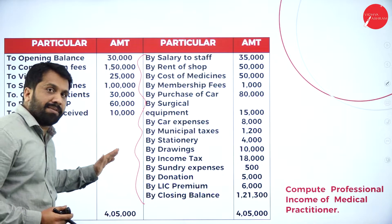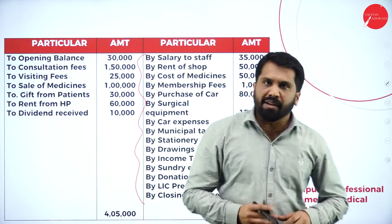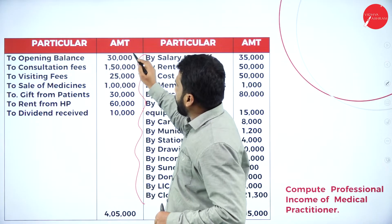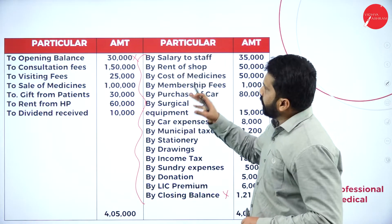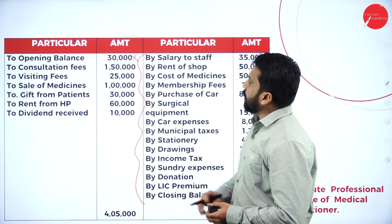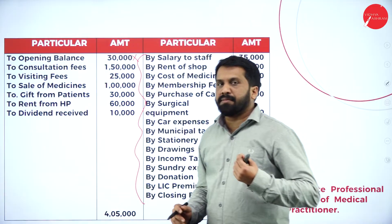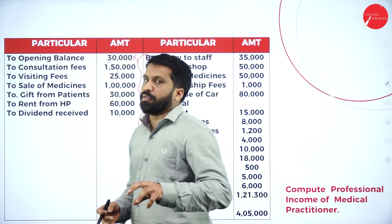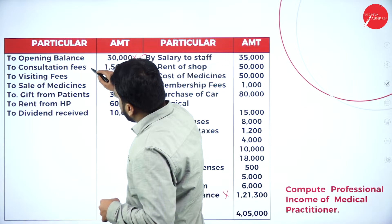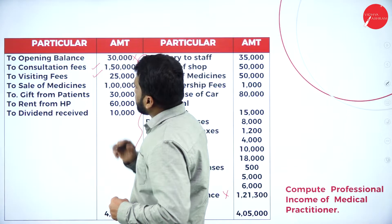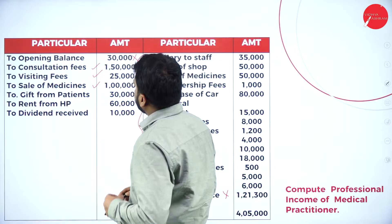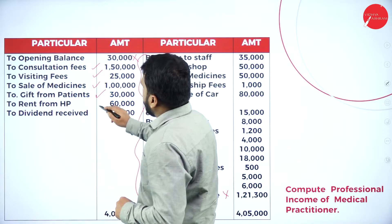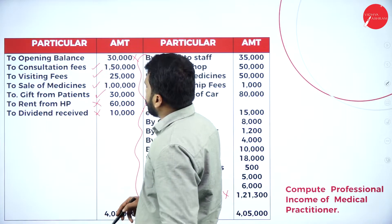We have expenses as well as incomes. For income, remember: opening and closing we will not consider — in your question we are not talking about medicine opening/closing balance. We go for only professional receipt: consultation fees — part of your profession; visiting fees — part of your profession; sale of medicine — part of your profession; gift from patient — part of your profession. Rent from house property is personal, and dividend received is also personal.